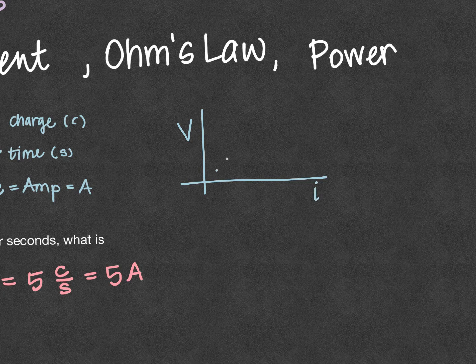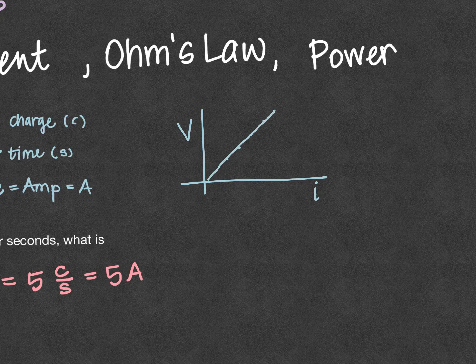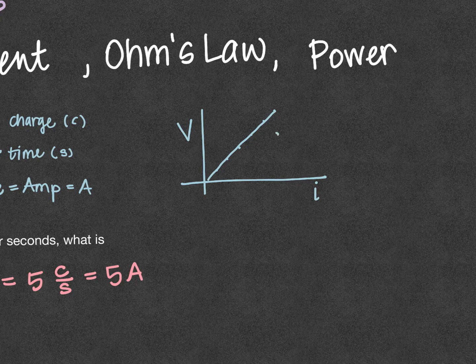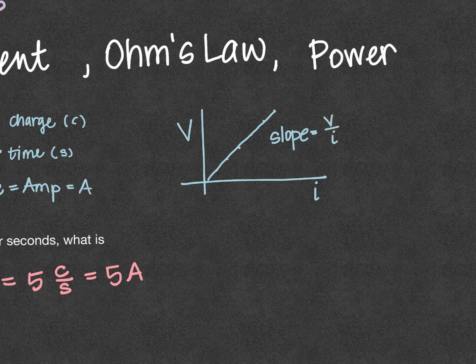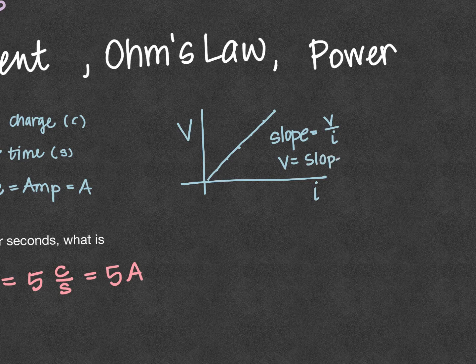He got a nice straight regression for many of the materials he tested, and if I use that slope equals rise over run, then I could write that V equals the slope times I, or the current.